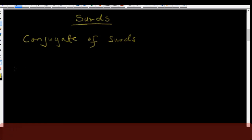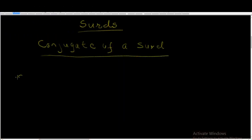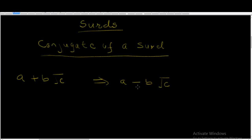So what do we mean when we say the conjugate of a surd? Given a surd of the form A plus B√C, the conjugate of this surd can be written as A minus B√C. What we simply did was to change the plus sign to a minus sign.